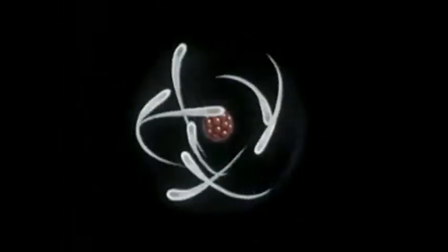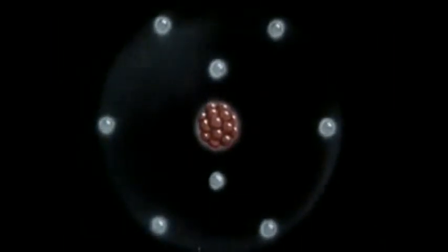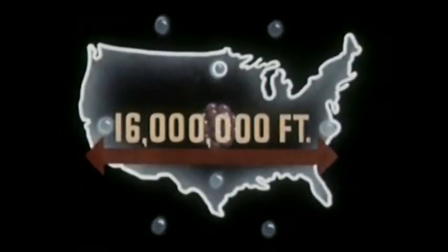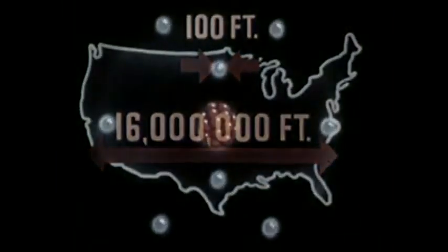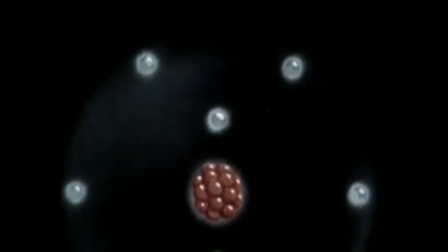No one has ever seen inside an atom. However, we think of it as a system of electrons circulating around a heavy nucleus at almost inconceivable speeds. To explain the principles concerned in this story, let's assume we can stop the action within the atom, and acknowledge that this is a symbol representing the atom, not an attempt to show it as it actually is. It is impossible to show the correct relative proportions of an atom on this screen. For example, if an atom could be as large as the United States, one of its electrons would be only about 100 feet across. Therefore, to tell our story, we must resort to a symbol, and think of the atom as a group of relatively light, small particles arranged around a heavy nucleus.